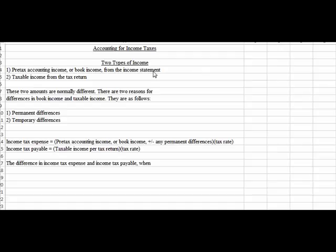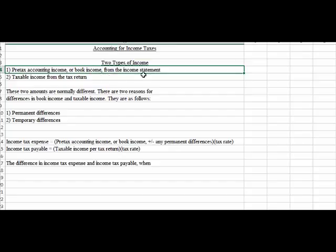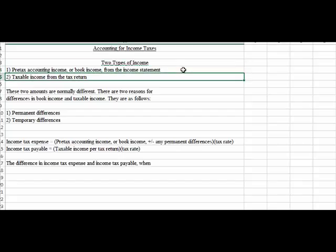You really have two types of income, you guys, and you're aware of this already. But you've got pre-tax accounting income, or what I call book income, and that's just your income before income tax number and it's pulled from the income statement. Now that number is prepared or calculated using generally accepted accounting principles. You also have taxable income pulled from the tax return, and that number is calculated using IRS laws and regulations, or IRS rules.